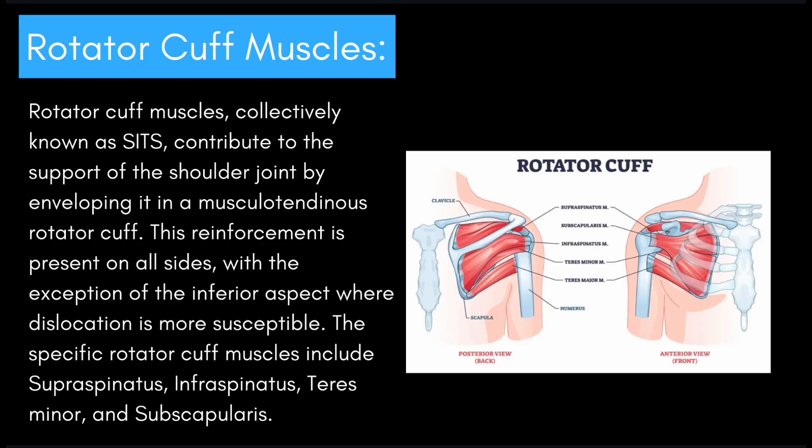Today I want to open up with a discussion on rotator cuff muscles. Rotator cuff muscles, collectively known as SITS, contribute to the support of the shoulder joint by enveloping it in a musculotendinous rotator cuff. This reinforcement is present on all sides with the exception of the inferior aspect, where dislocation is more susceptible.